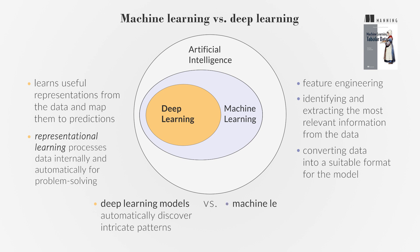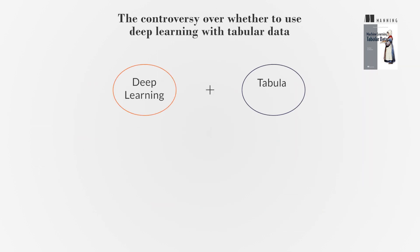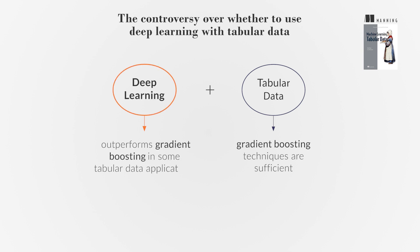In contrast, classical machine learning models focus more on manual data processing and other ways to embed subject matter expertise into the model. Using deep learning with tabular data is a controversial topic in data science. Some practitioners believe that gradient boosting techniques are sufficient and that deep learning is unnecessary. In contrast, others argue that deep learning outperforms gradient boosting in some tabular data applications. This text explores gradient boosting and deep learning for tabular data, guiding when to use each approach.